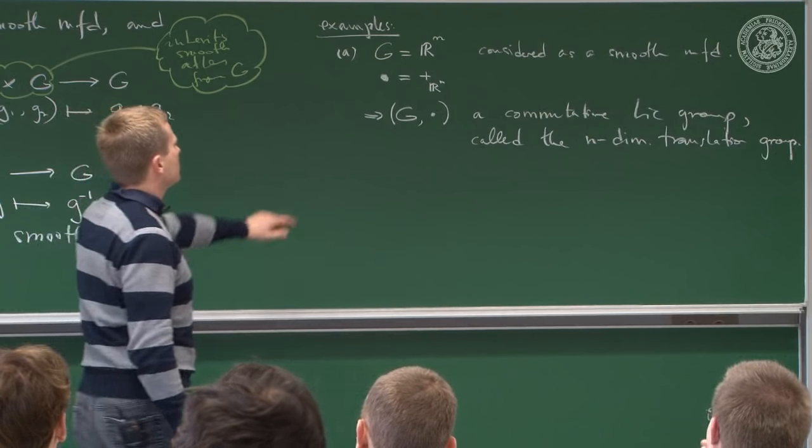The set of all left-invariant vector fields on a Lie group G will be denoted L(G). So far it's only a set, but we quickly observe that L(G) is a subset of Γ(TG) — all sections of the tangent bundle — which is a C^∞(G) module. We ask: is L(G) not only a subset but a submodule?